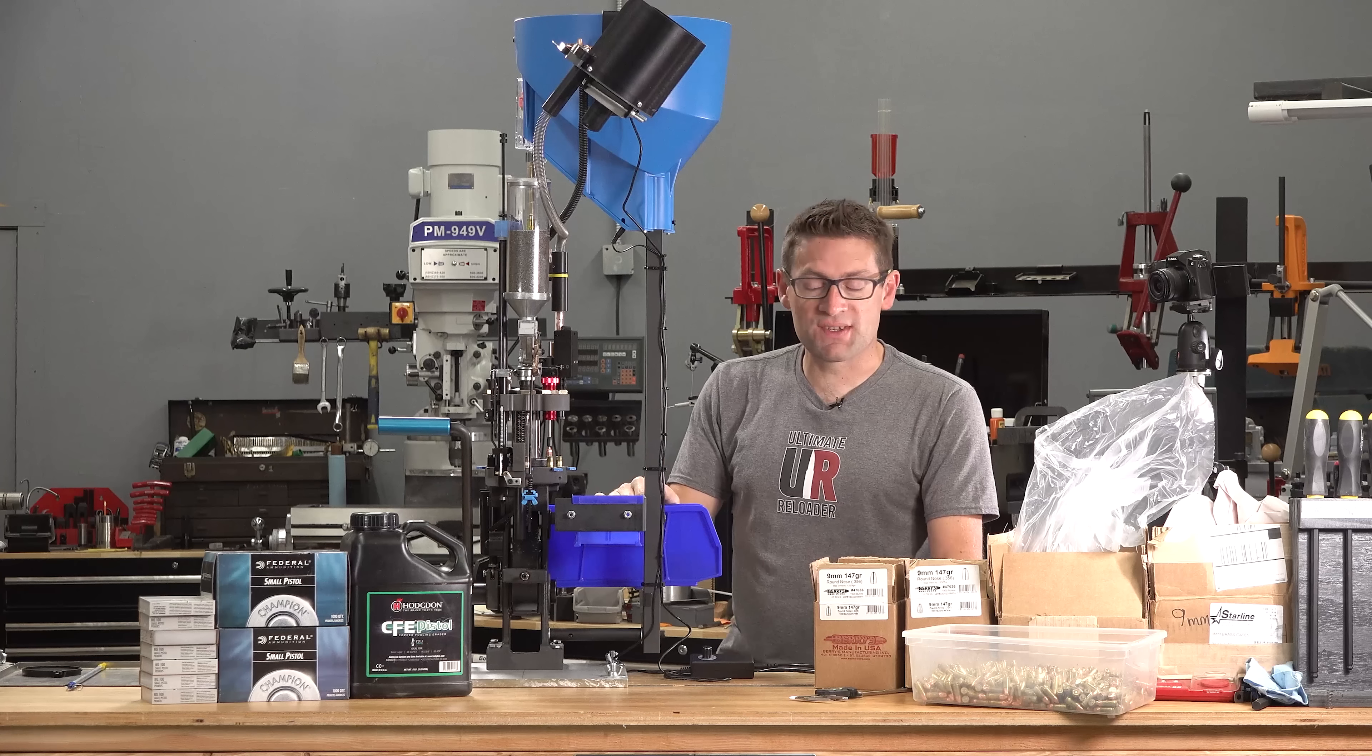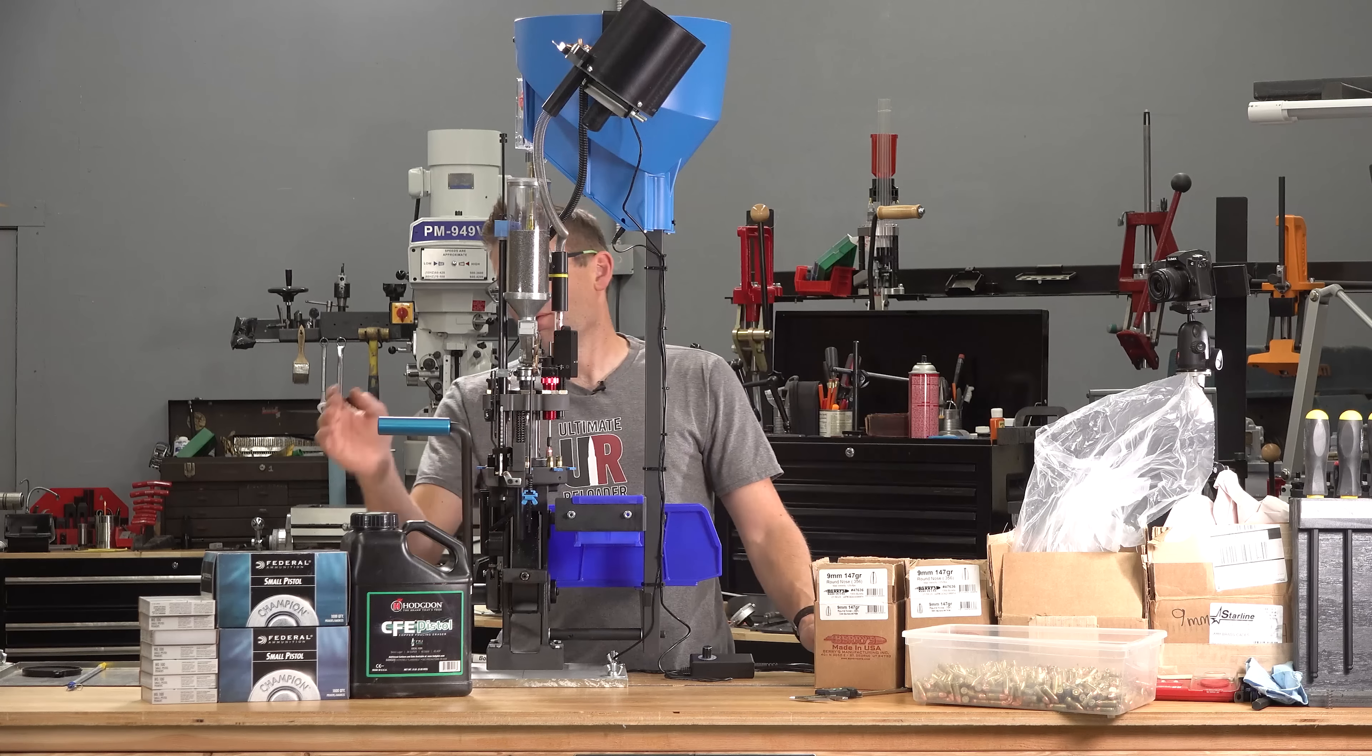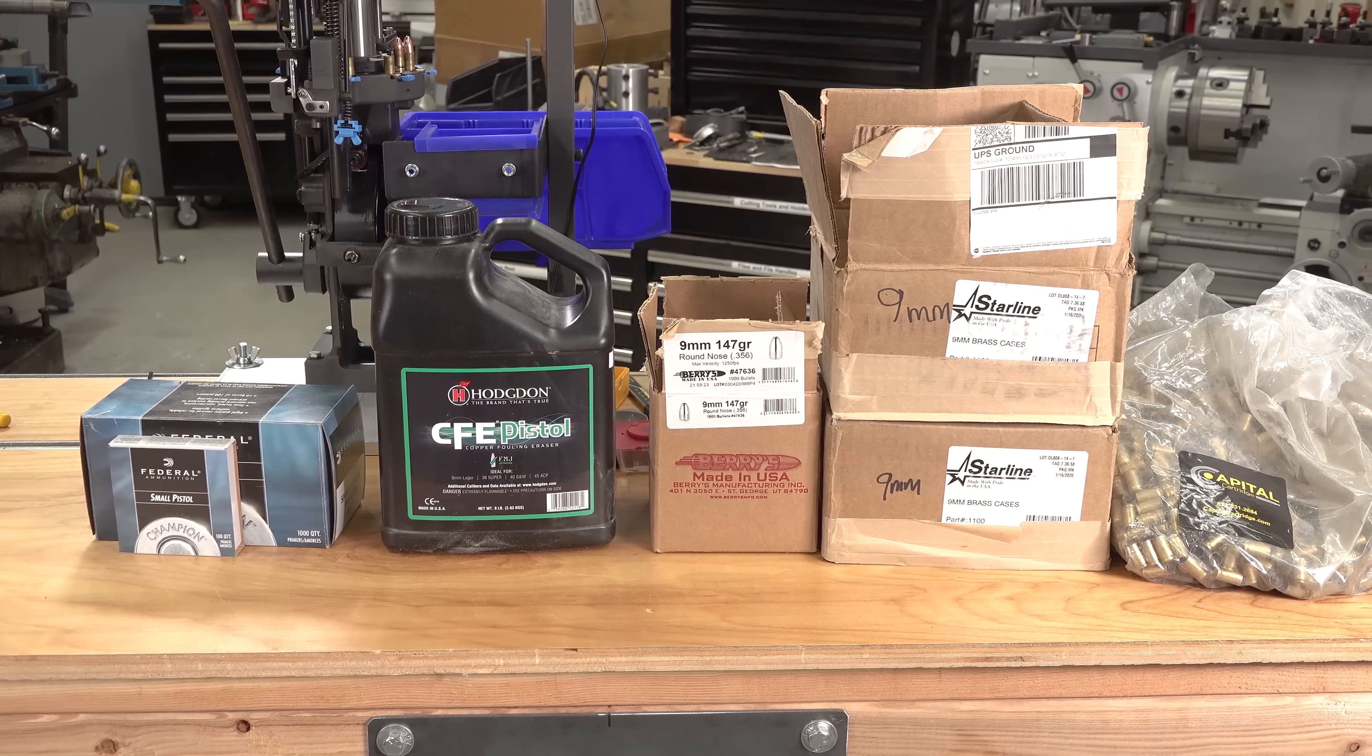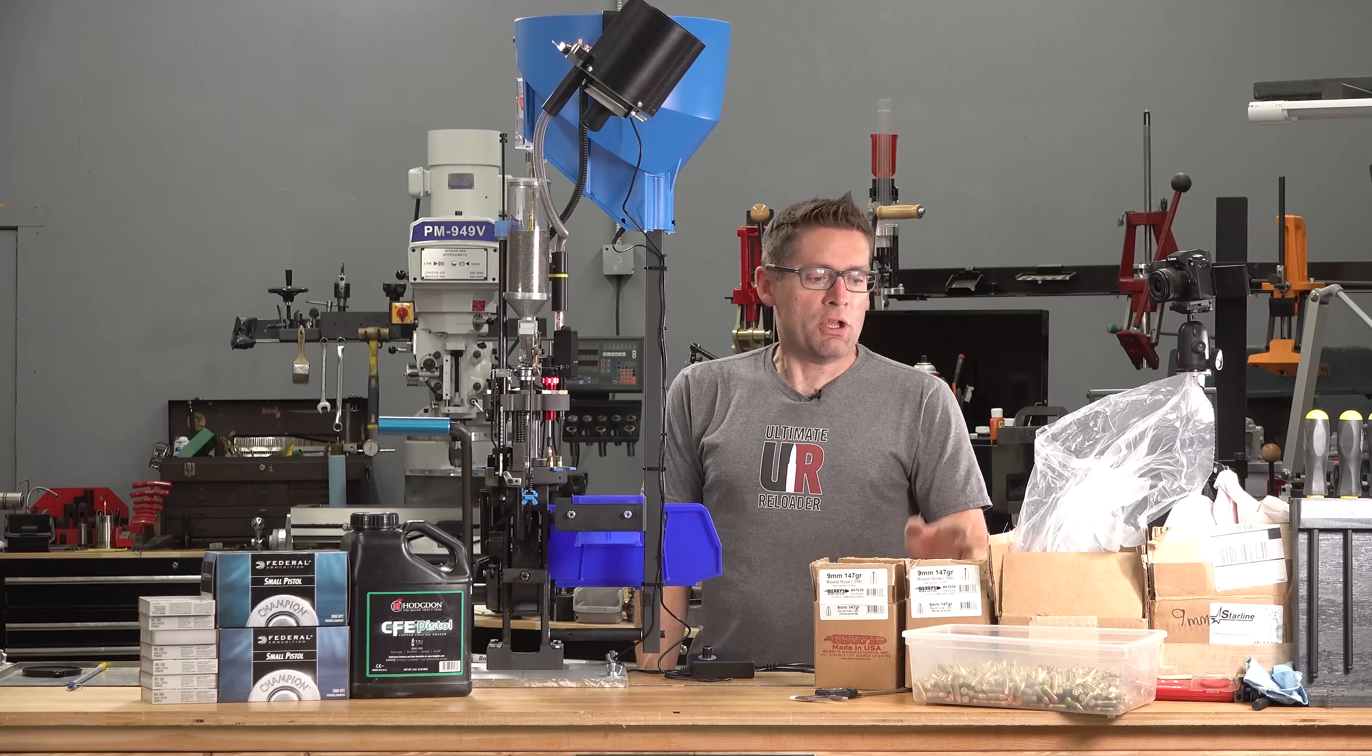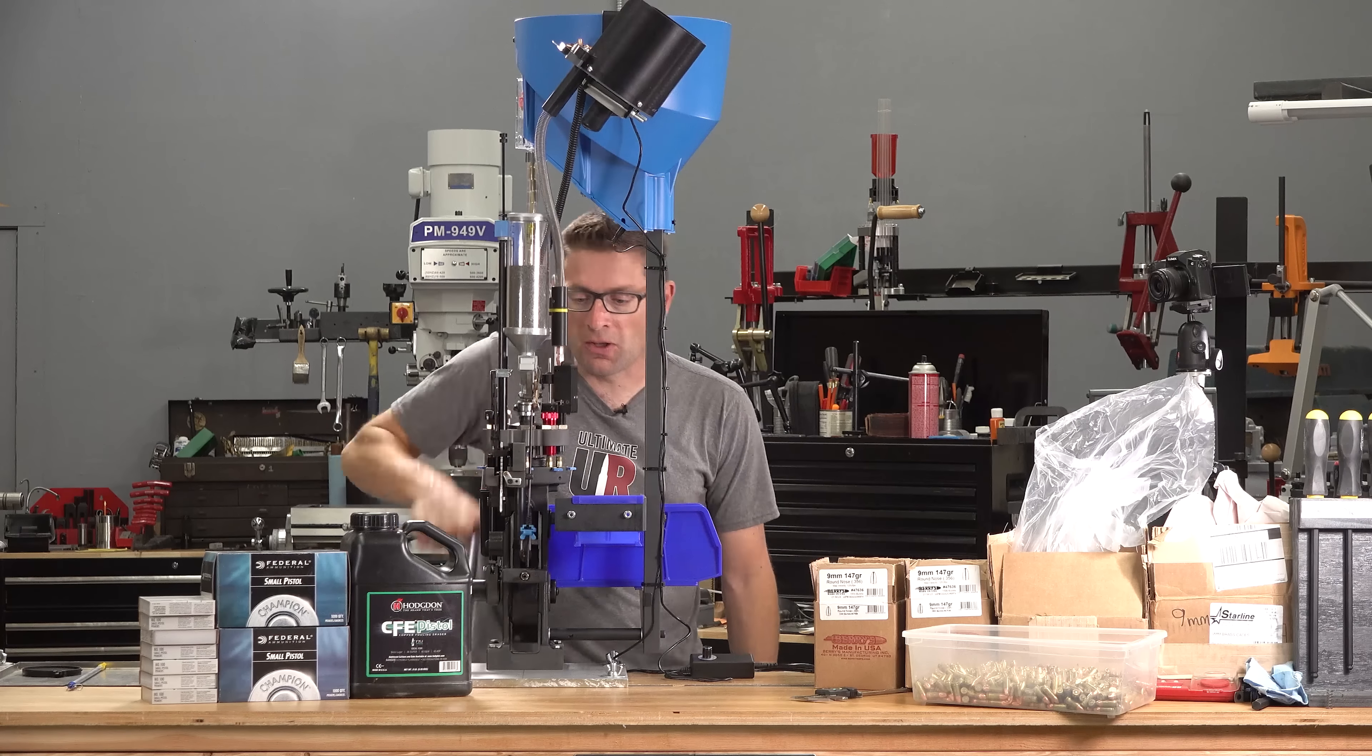Okay, to review the components. This is the same components and same load for that matter that I was using in the RL 1100 unboxing video. I've got Federal small pistol primers. I've got Hodgdon CFE Pistol powder. I'm using these Berry's 147 grain plated round nose bullets. This time I'm going to use the Starline brand new 9mm brass. With this high speed setup, that's going to ensure that everything runs as good as it possibly can. So let's take a look at our loading setup here now.